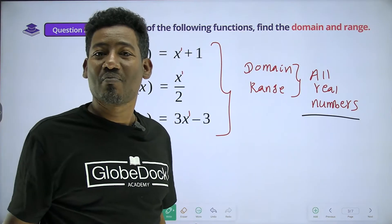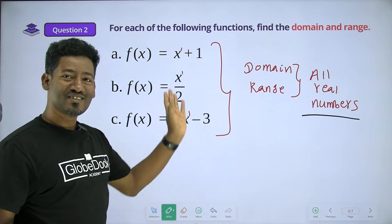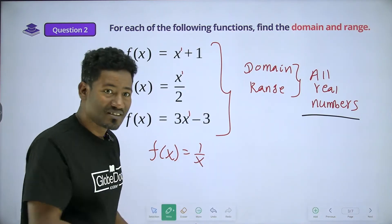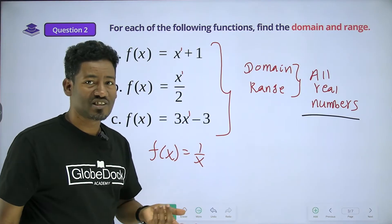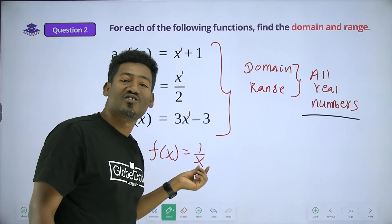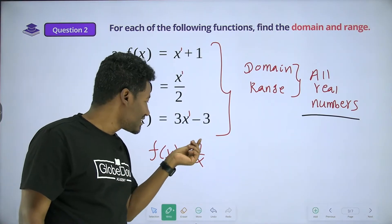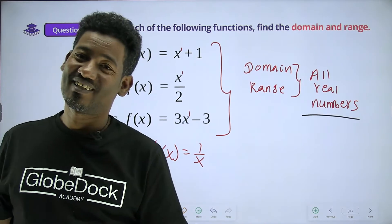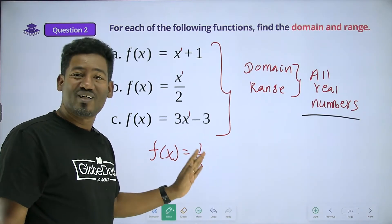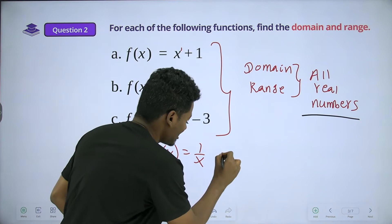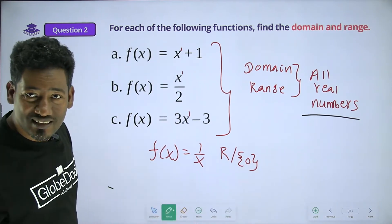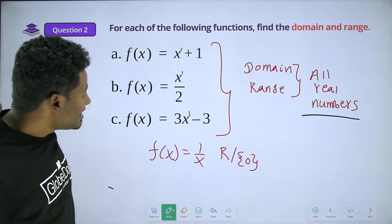f is equal to 1 over x. You can see that all the x values are equal to the real number, and you can see that 0 is equal to 1 over 0 — it is undefined. So the domain is all real numbers except 0.